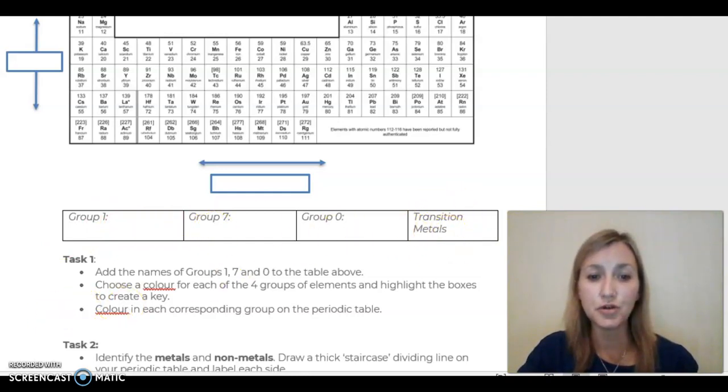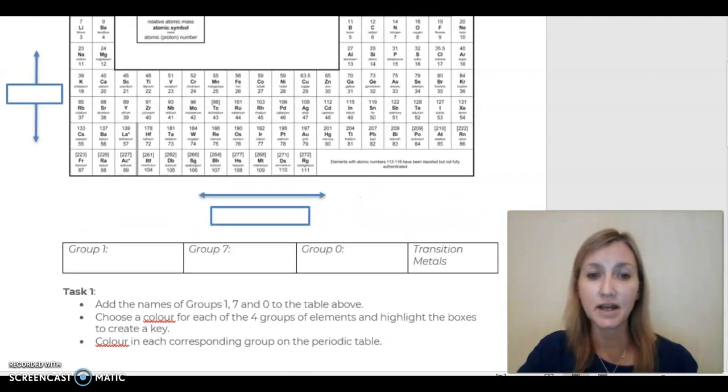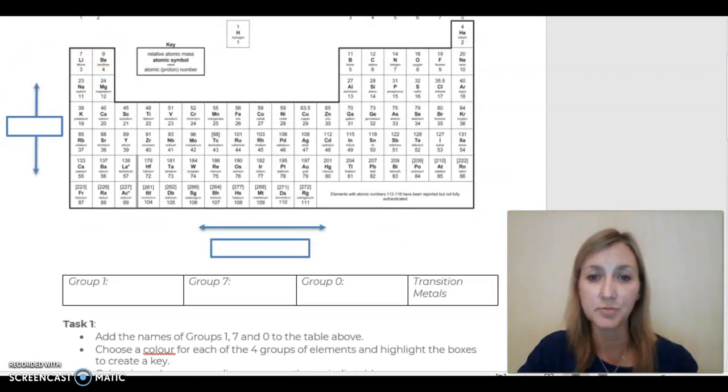You then need to choose a colour for each of these four groups of elements and highlight each of the boxes in the colour that you've chosen. You then need to colour in and shade in the corresponding group on the Periodic Table above.